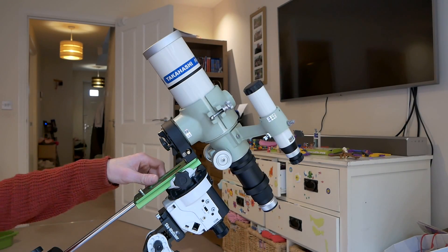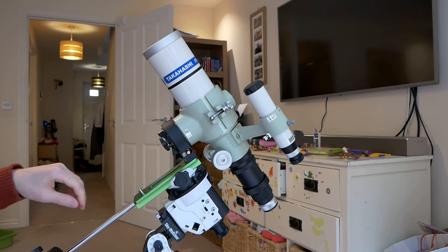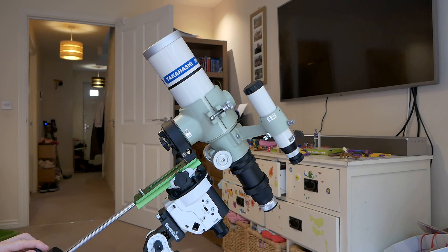I couldn't resist - I had to put the Takahashi FS60 on and just see how it does on the Star Adventurer mount. Still horrible day outside today so I can't go out and try it with my Lunt 50 for a bit of solar.